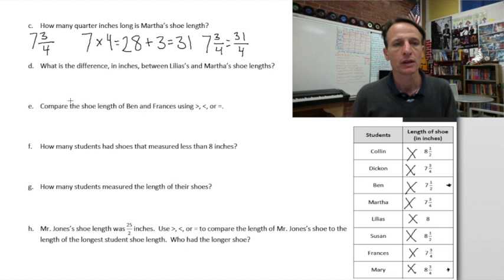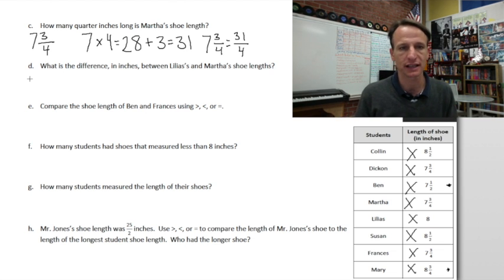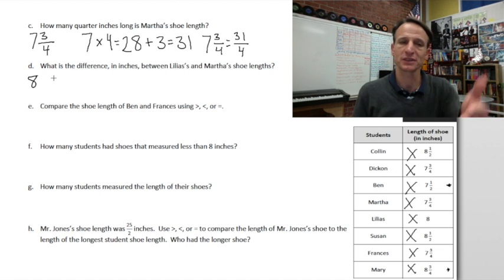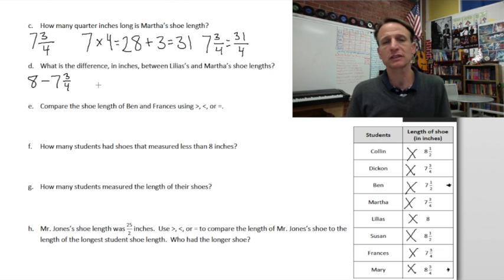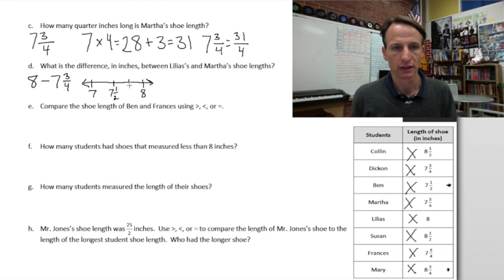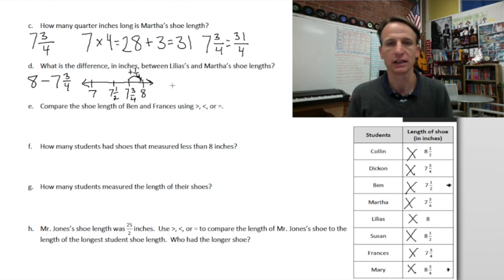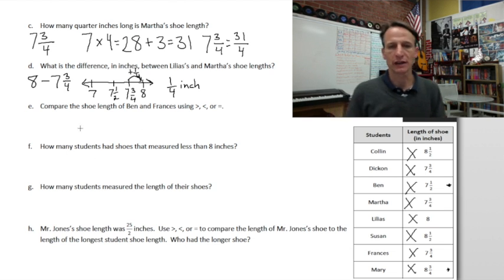Part D: what is the difference in inches between Lilius's and Martha's shoe lengths? Lilius is eight, Martha is seven and three quarters — so we're subtracting eight minus seven and three quarters. Drawing a quick number line from seven to eight, with seven and three quarters marked, you can see that going up one fourth of an inch gets you from seven and three quarters to eight. The answer is one fourth inch.